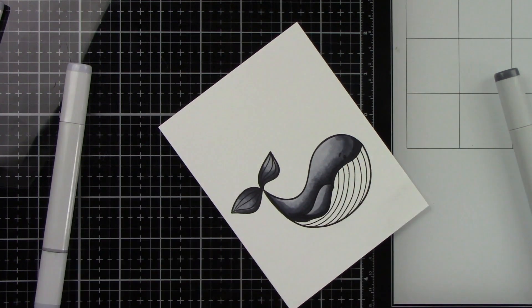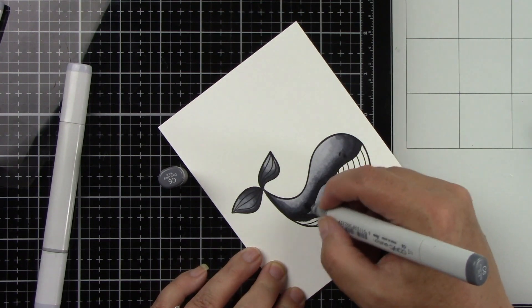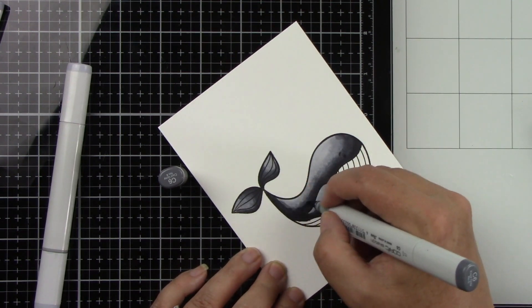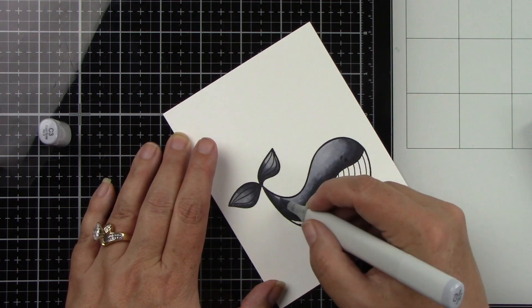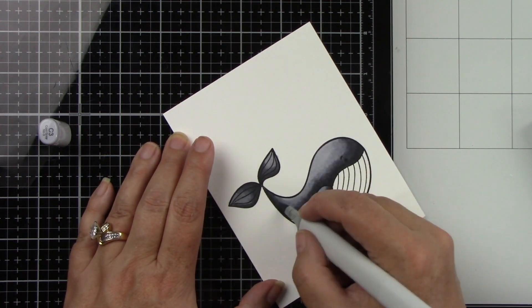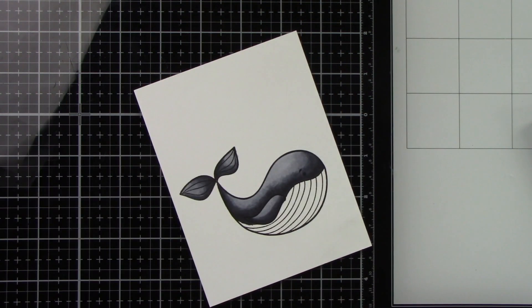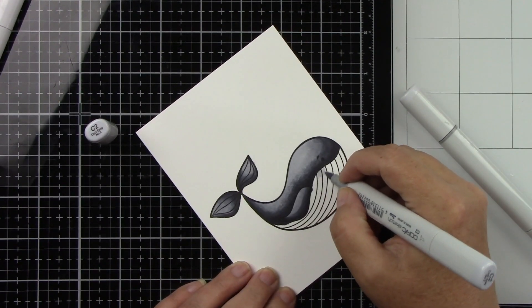When I color with my Copic markers I kind of go through the one routine and then I go through it again. I put down my darker color then I kind of blend over it with my medium and then go back over it with my light and I do that twice. I just get the best blend when I do it twice.